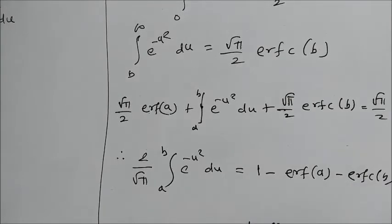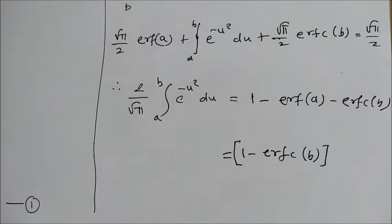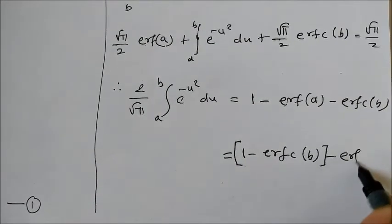I will take this in one bracket: [1 minus erfc of b] minus erf of a.